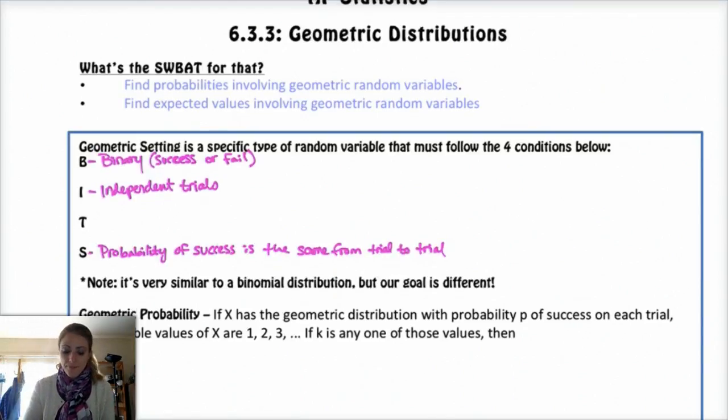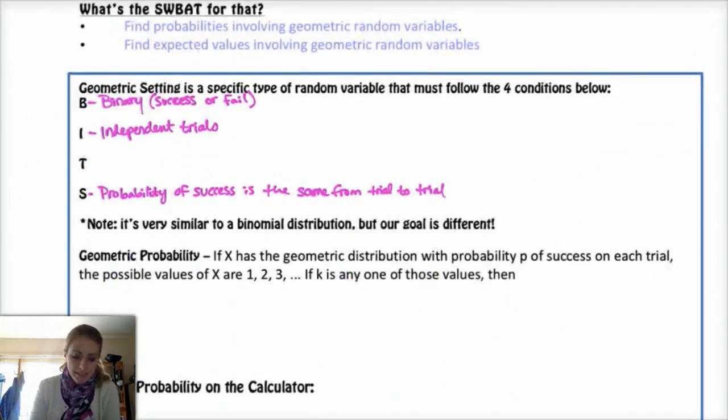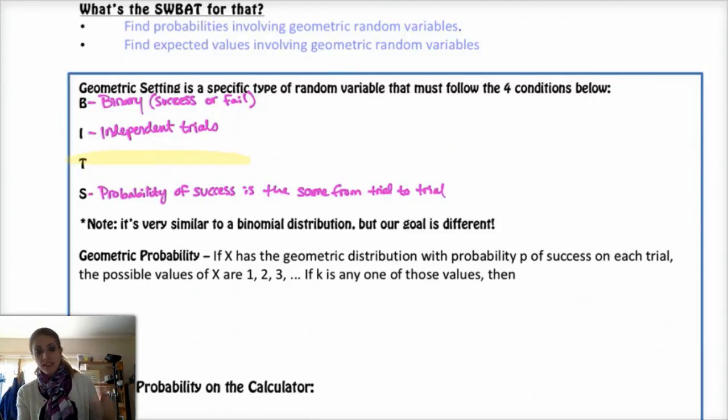The only thing that's different is this T. For binomial distribution, our conditions were BINS. N was that the number of trials is fixed. So out of 10 rolls, how many fives do I get? You have a fixed number of trials.